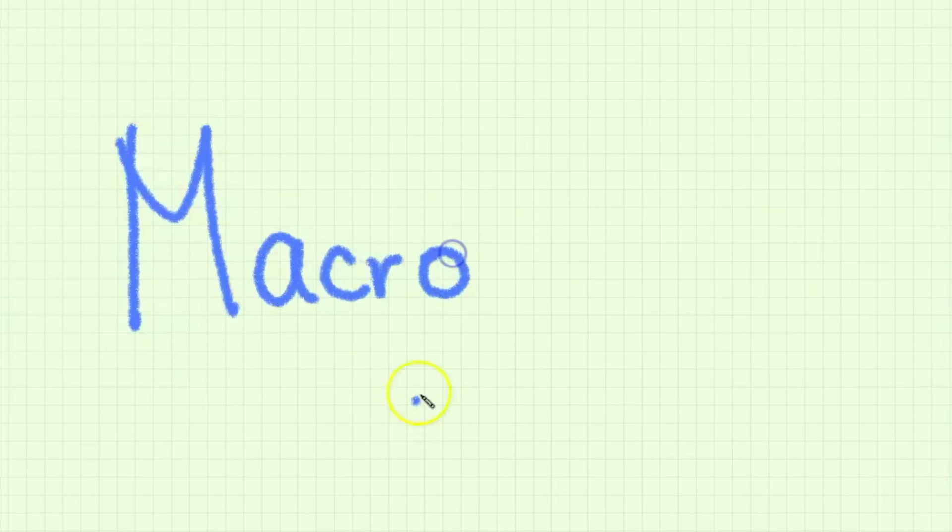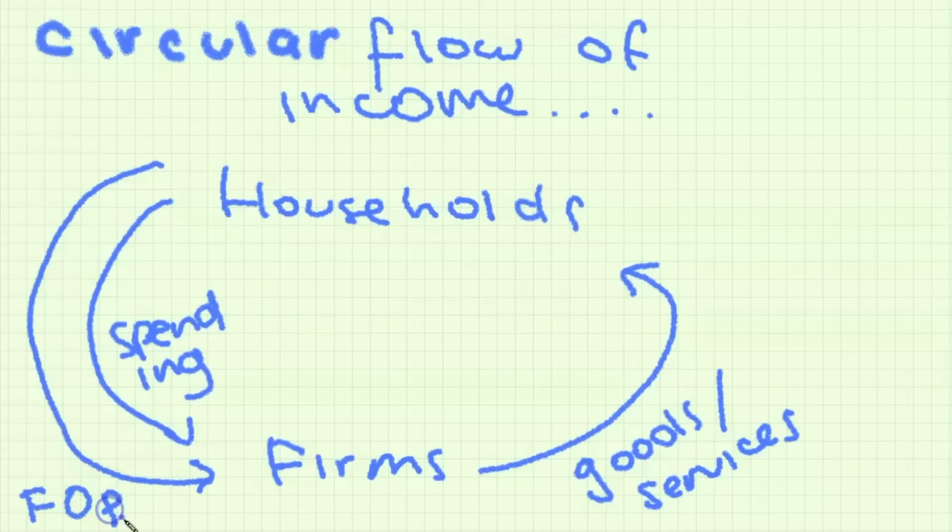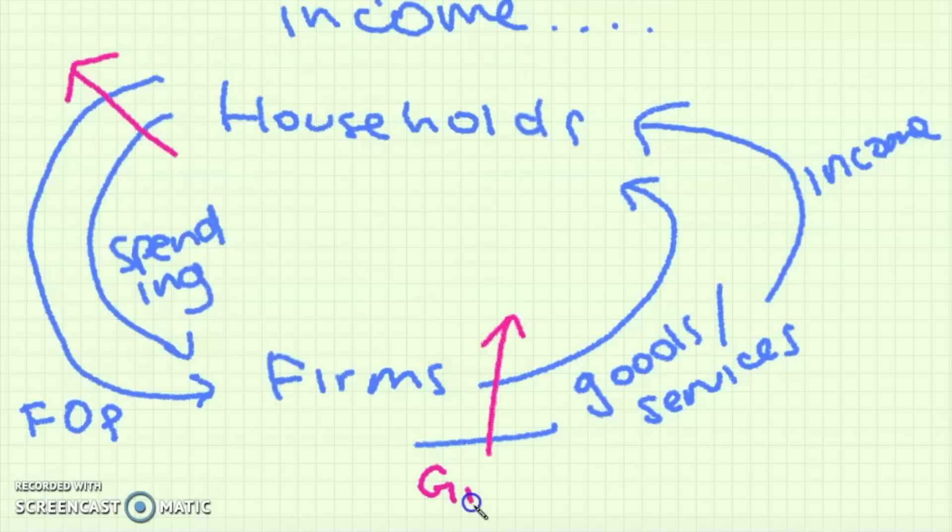Now we can start with macro. The first curve in macro is the circular flow of income where we have households and firms. We see that firms give households goods and services and in return households give firms spending. Households also give firms their factors of production like labor and land and in return firms give them income, so wages.